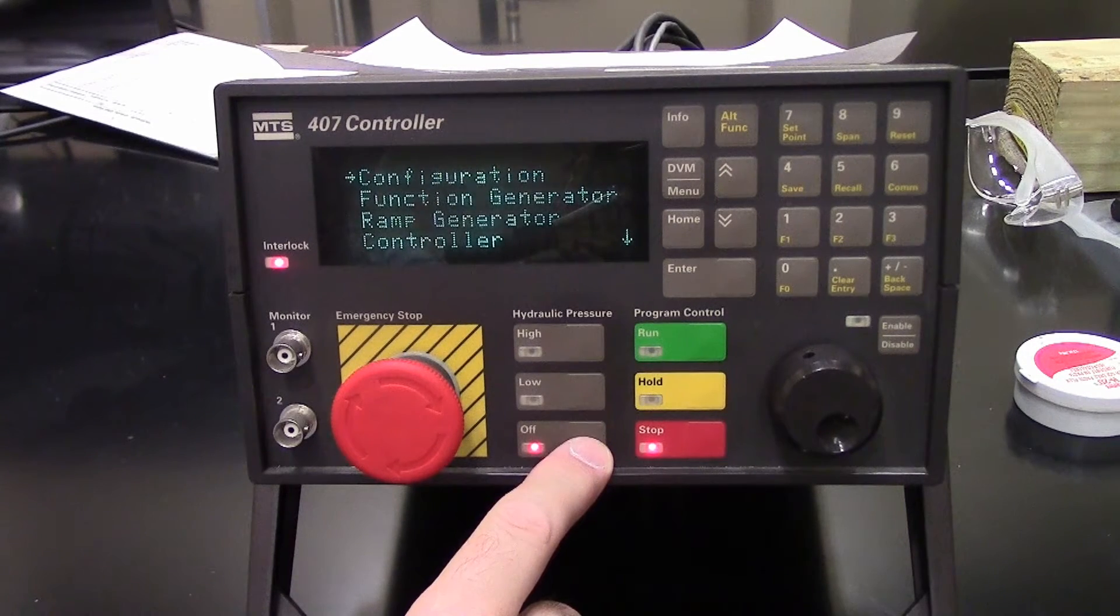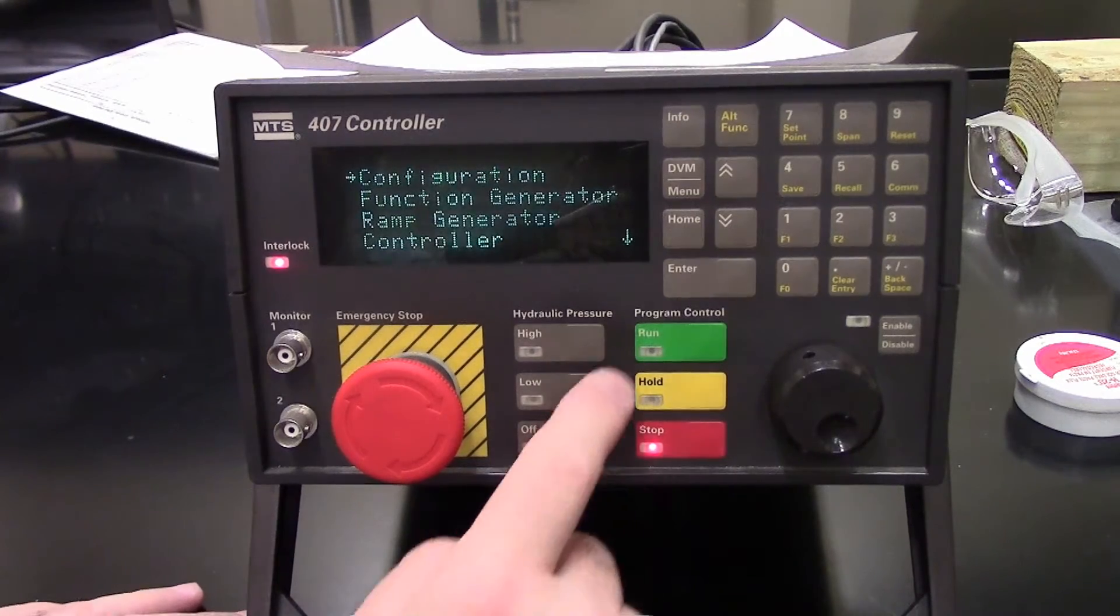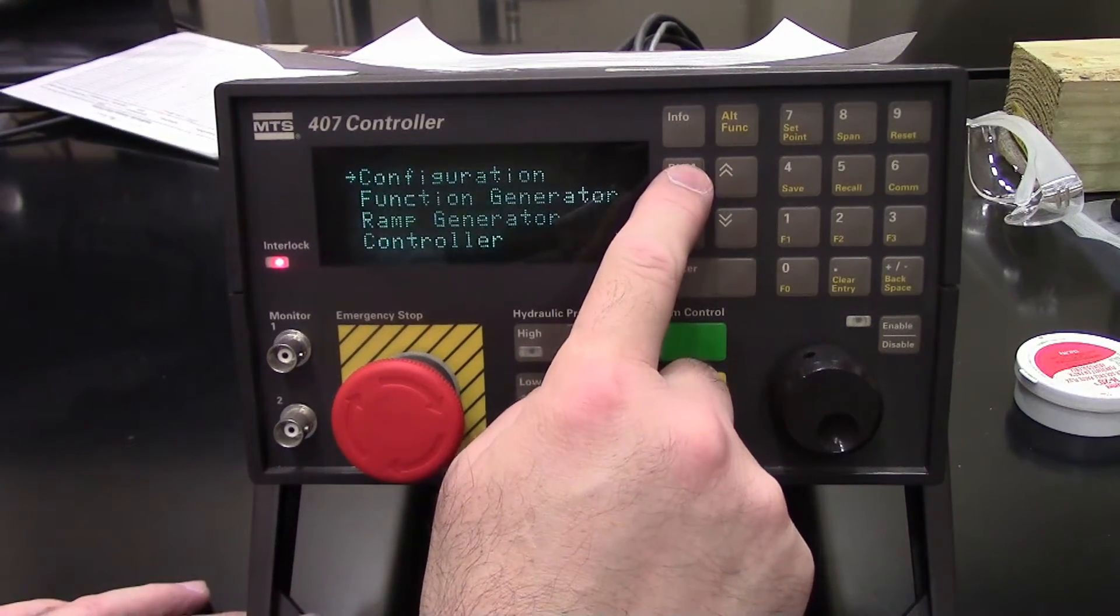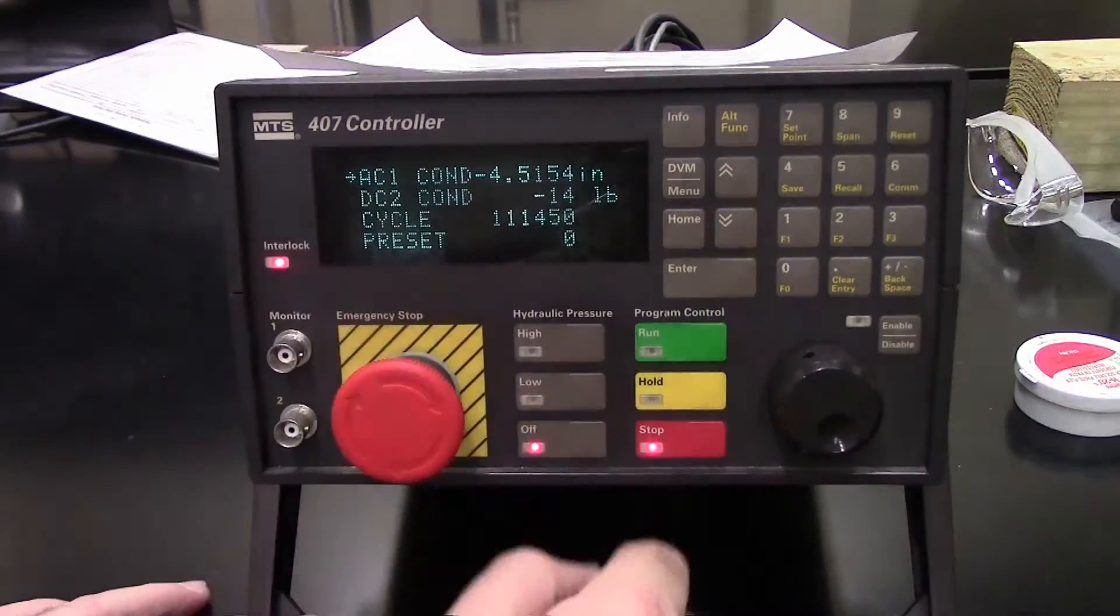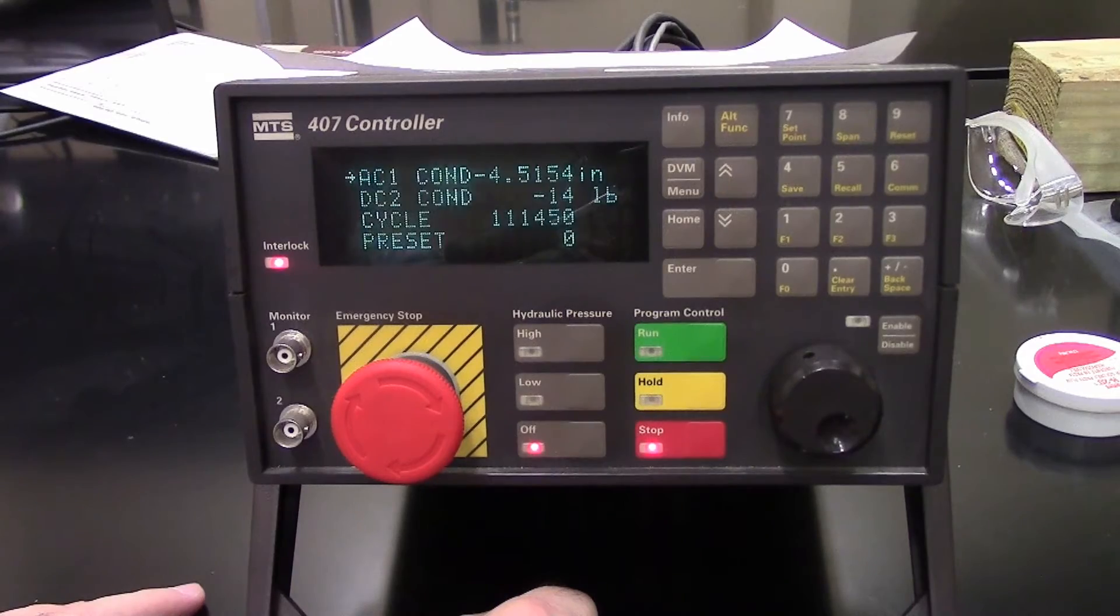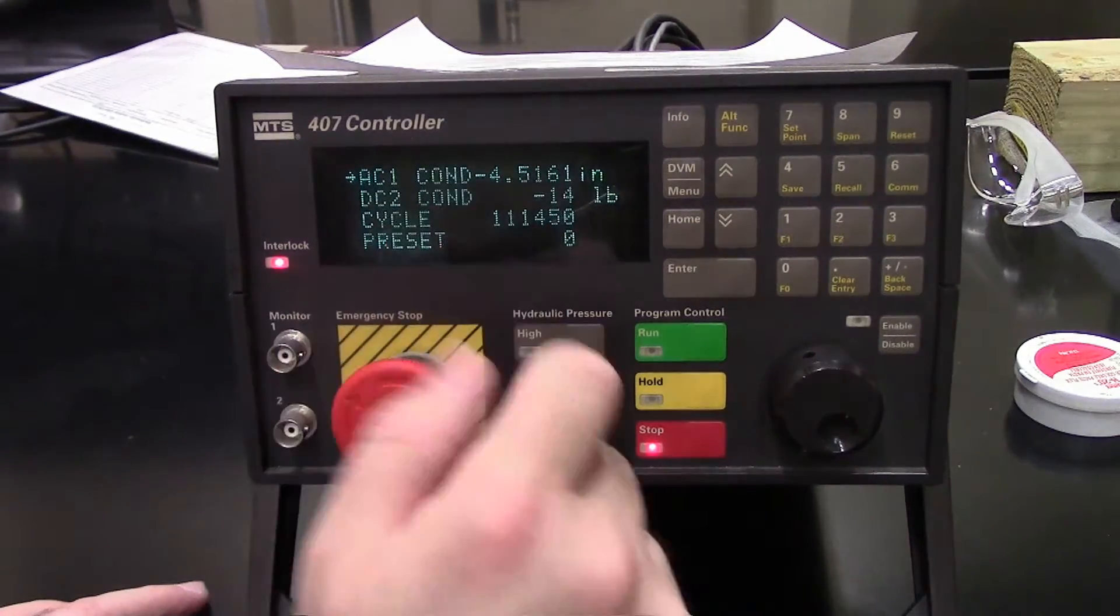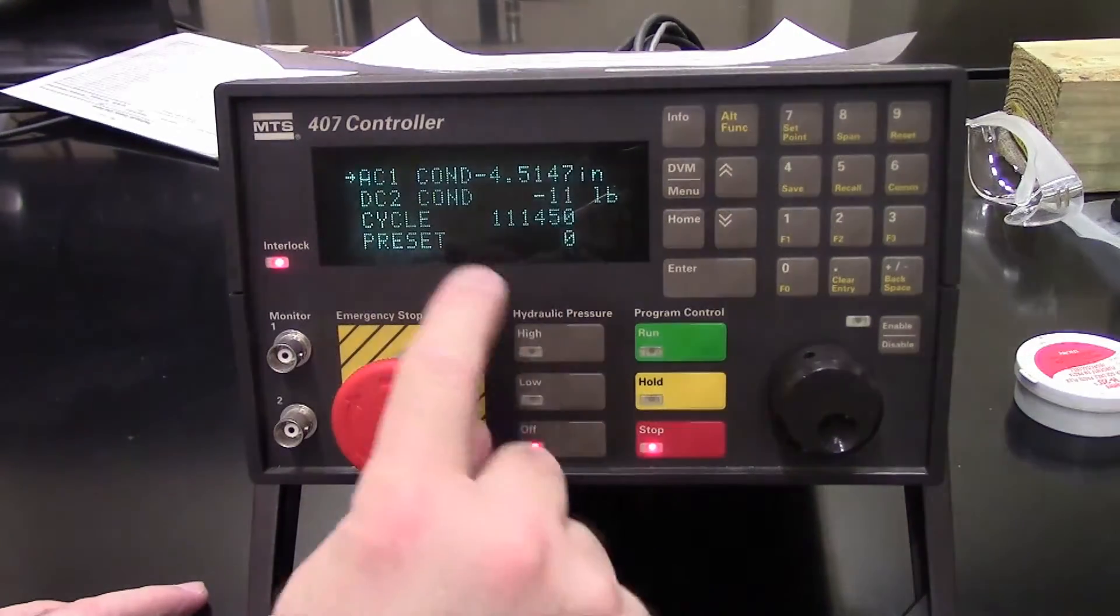I'm going to go through each of these menus. There are multiple menus, and there's what's called the menu and the DVM button. The DVM is a digital voltmeter. As you press this button, it'll swap between the current AC1 conditioner reading, which is displacement, the LVDT, and the DC2 conditioner, which is the load cell. Here's the cycle count.